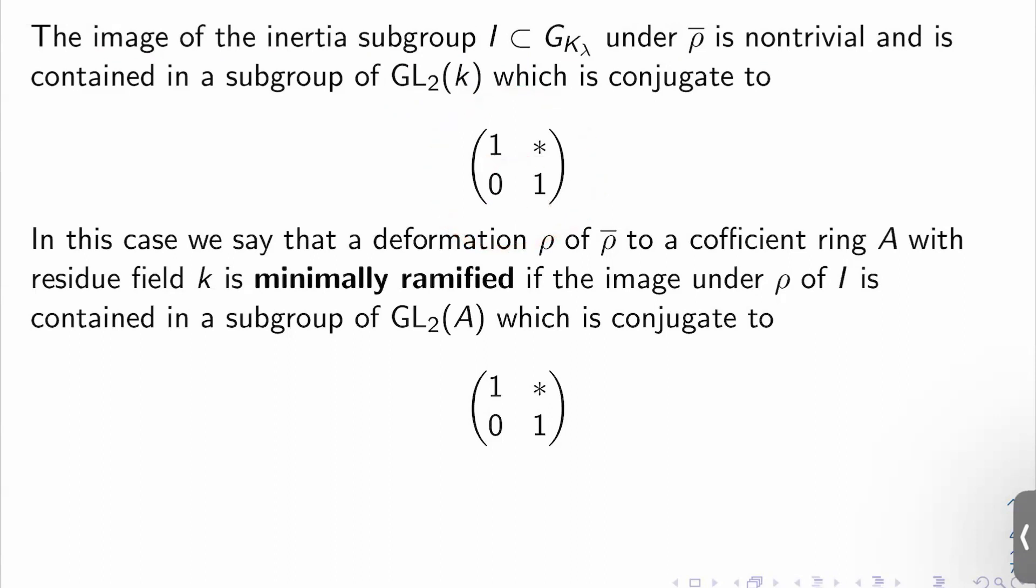So we have a minimal ramification condition here. If we had total unramification, there would be a zero here. And so we're allowing a minimal ramification in some sense by allowing this upper entry to vary.